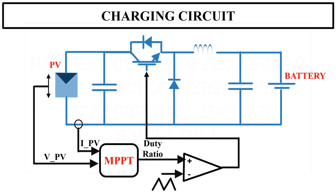This is the charging circuit that I am going to simulate now. A buck converter is used with a battery connected at the output terminal. The battery charging current is decided by the MPPT. Here I use the perturb and observe based MPPT algorithm.